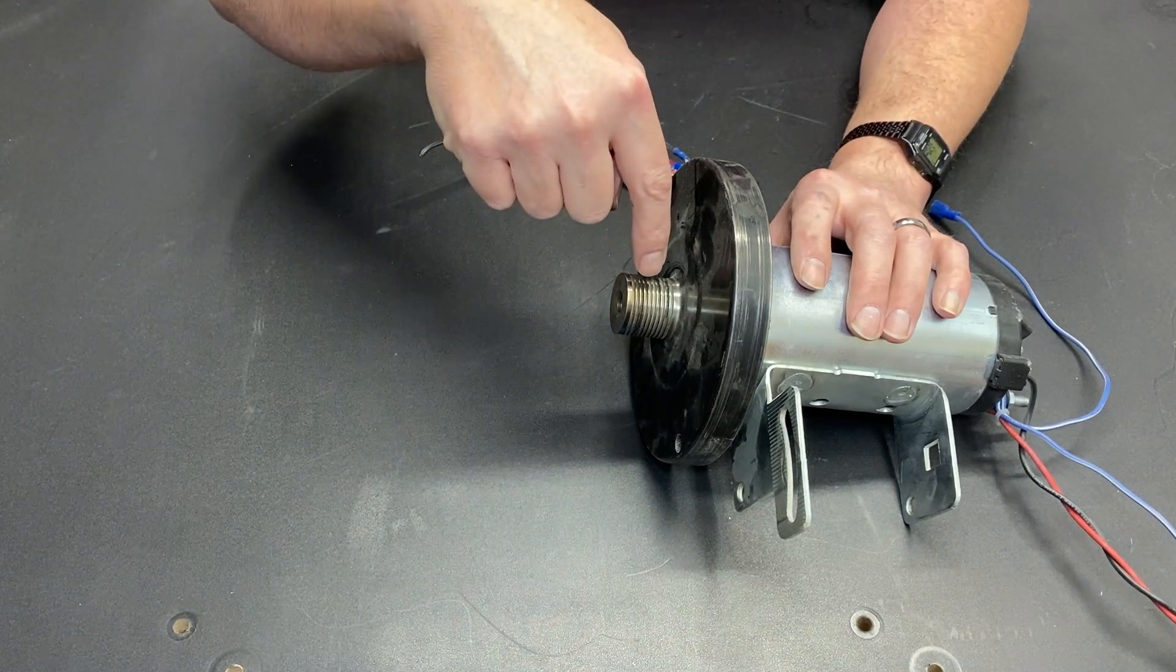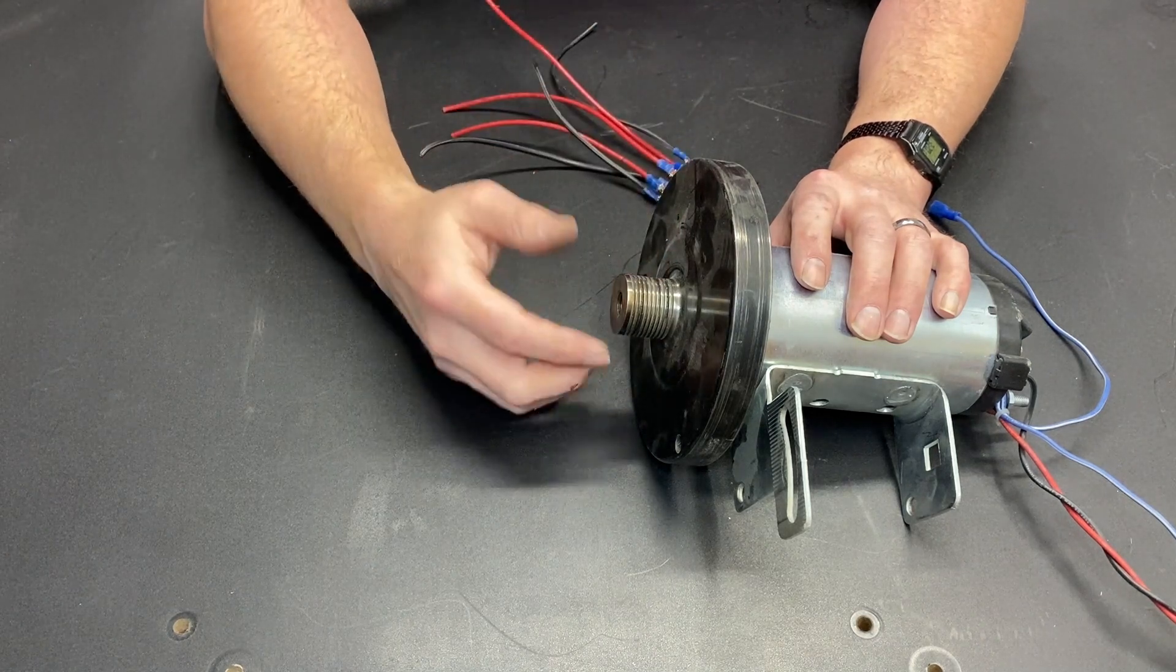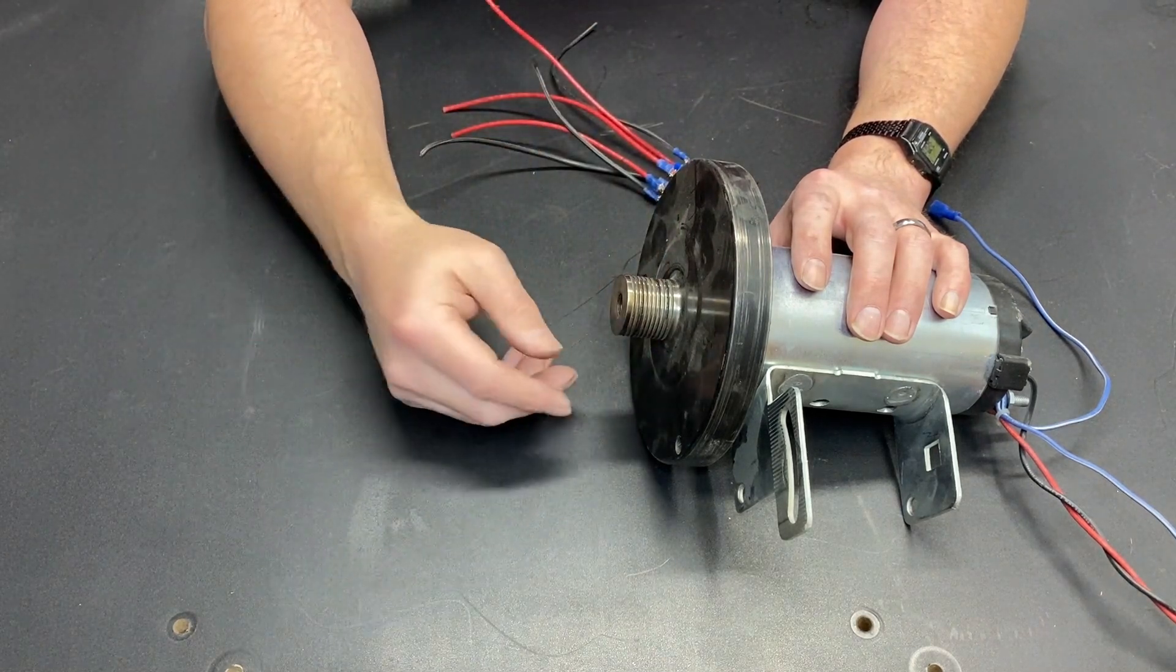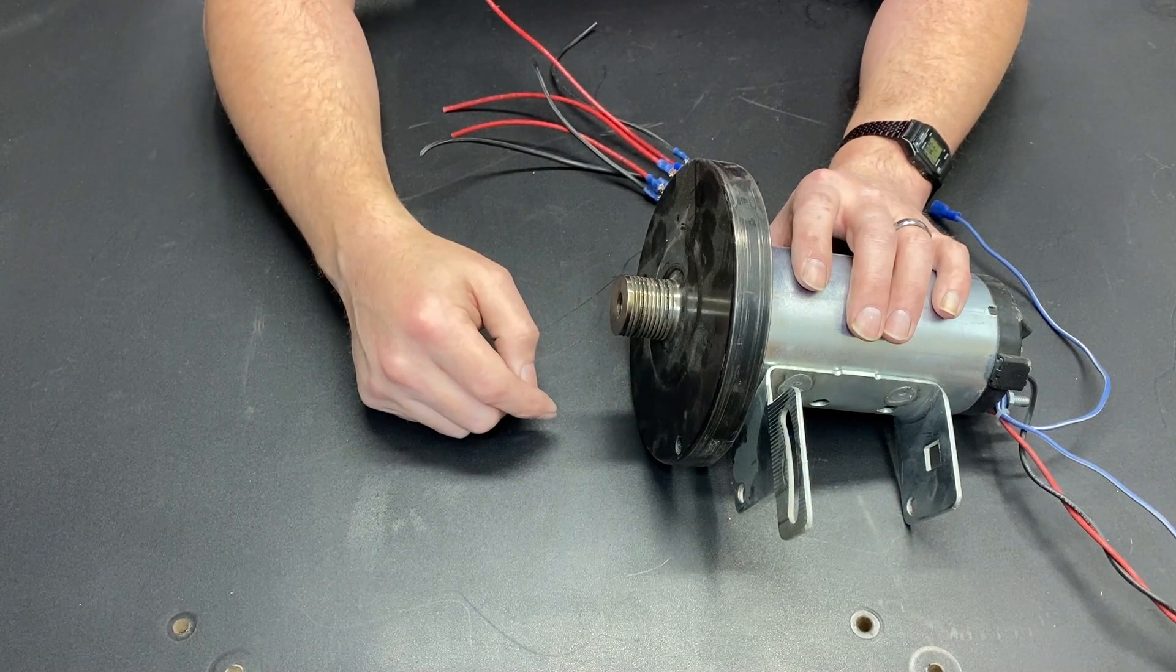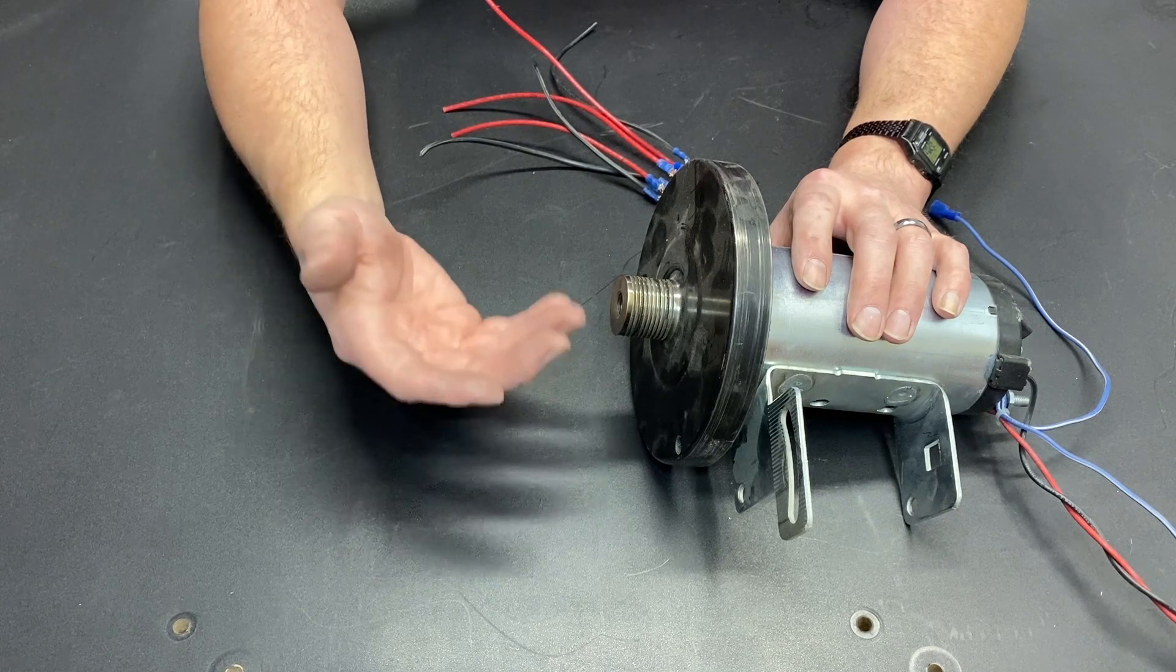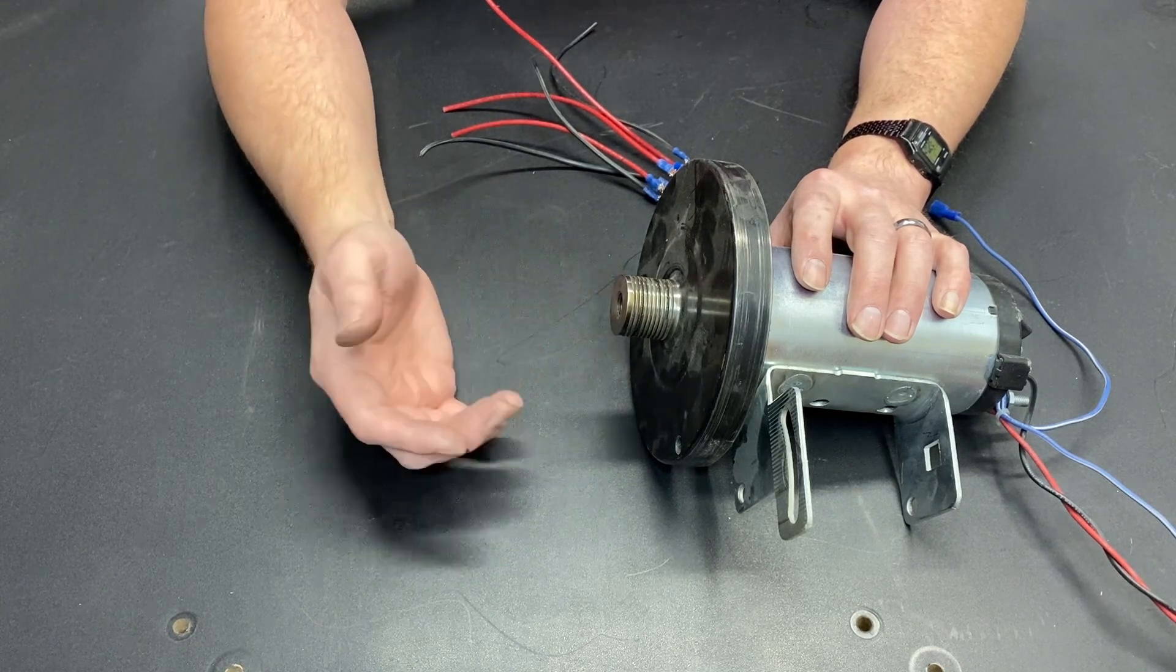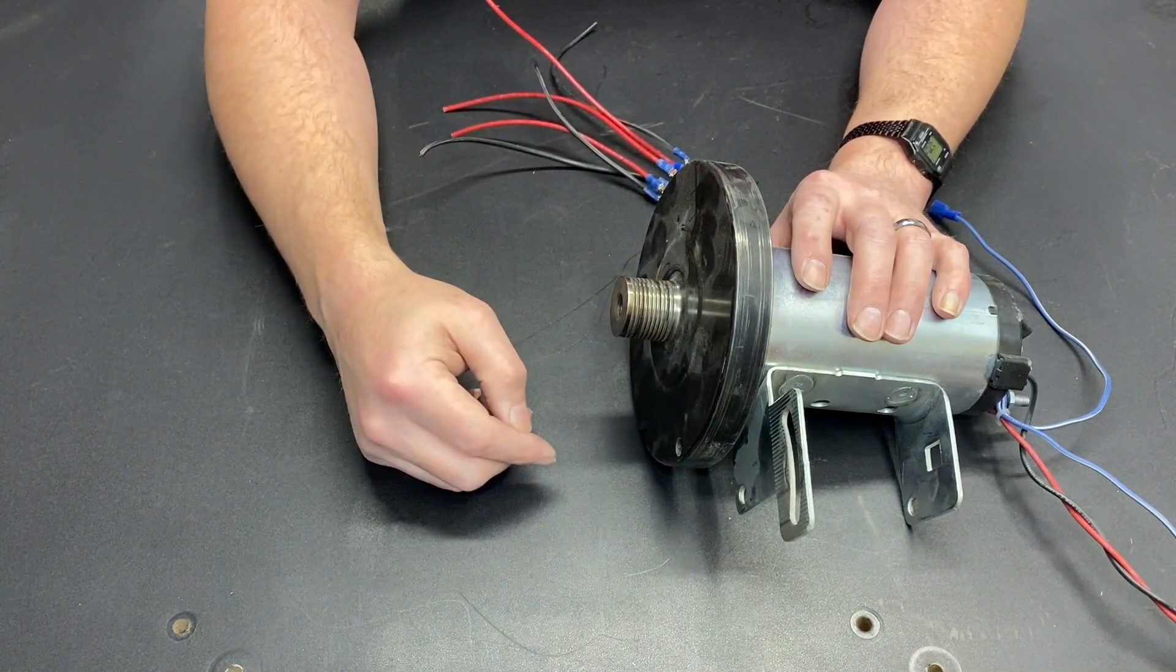Another option would be to drill a hole in this, thread it, and run a set screw down. That could help hold it. But that, to me, is a lot of work, and you run the risk of damaging the threads inside. Personally, I like the concept of just simply using the Loctite. It works extremely well, it's not going to come loose, and you'll be able to run that motor in reverse.